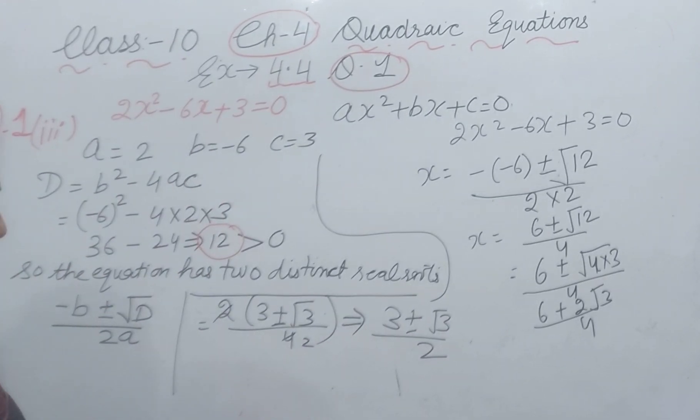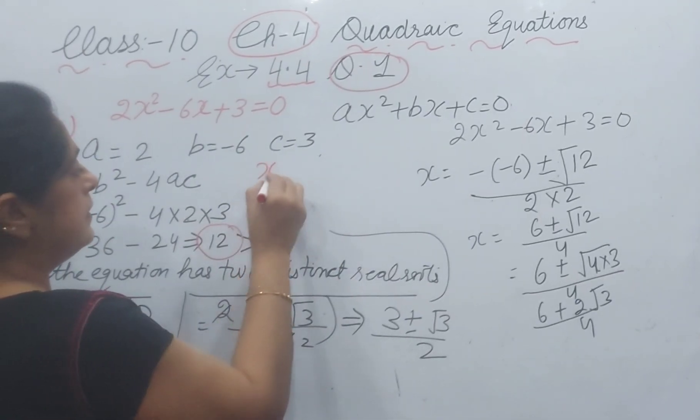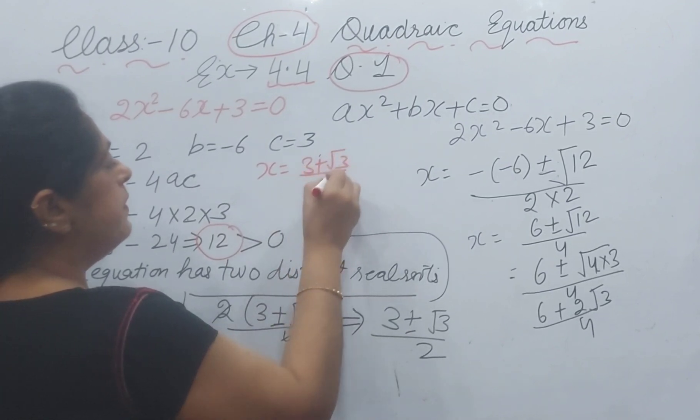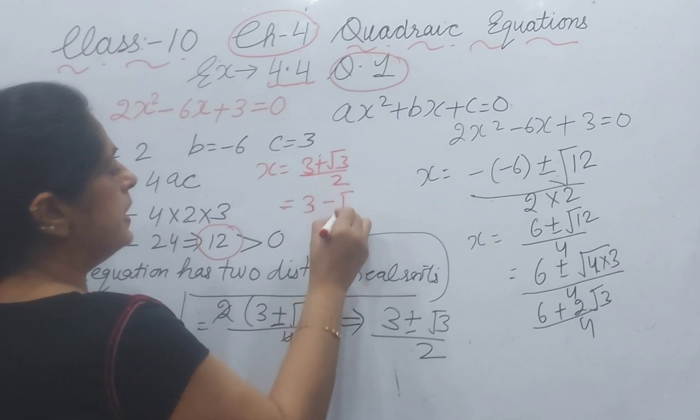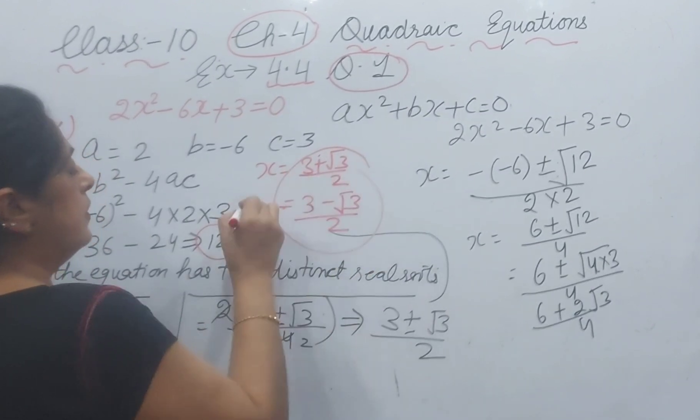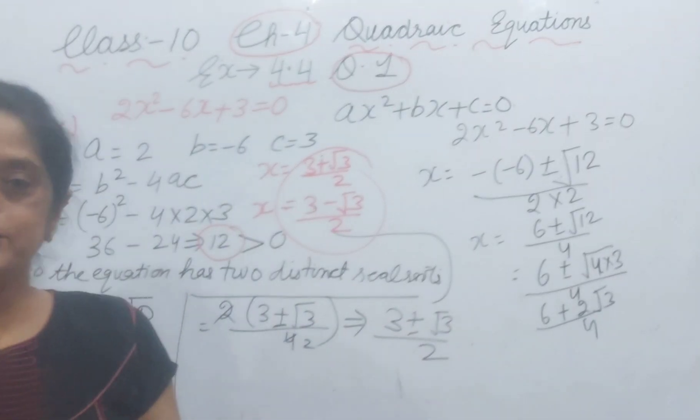So x = (3 + √3)/2 and x = (3 - √3)/2. These are the two roots, and I hope you understood.